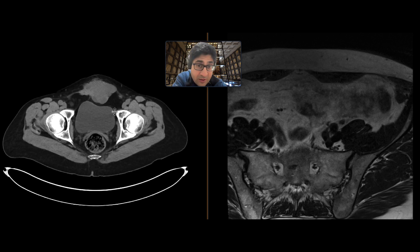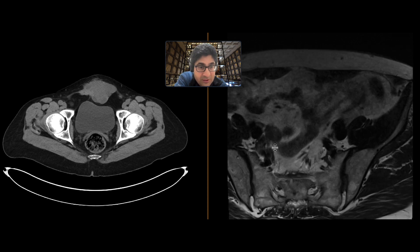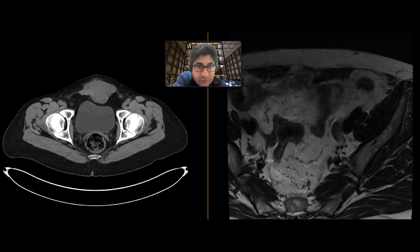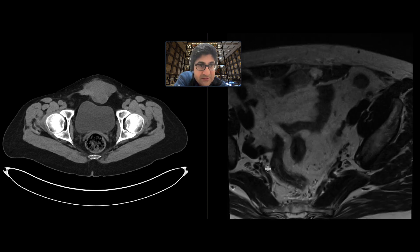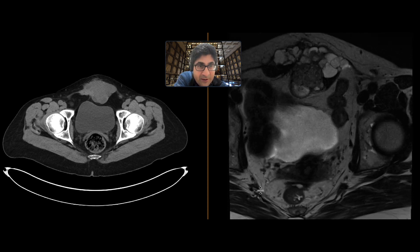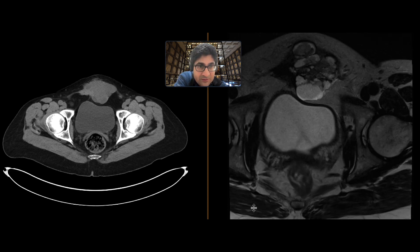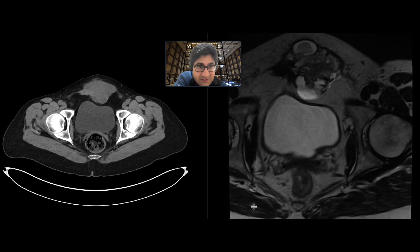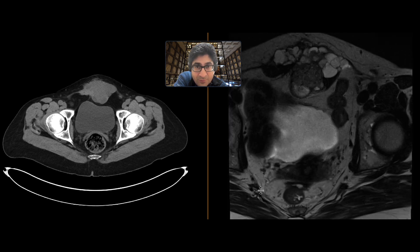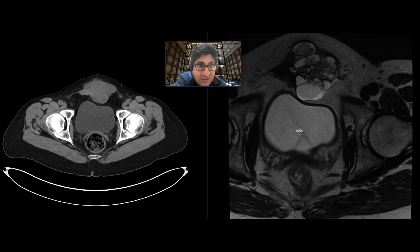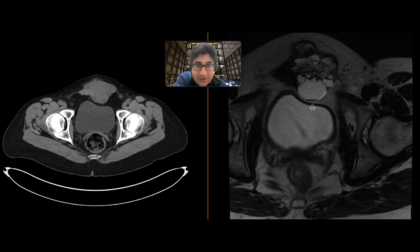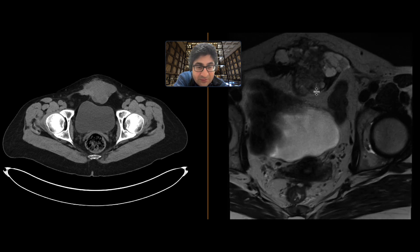An MRI was obtained to look at this a little bit better and see what's going on. I'll show you a few images from the MRI. This is the T2-weighted image without FATSAT. We can certainly see the mass there. It has components that have a sort of intermediate T2 signal intensity, and other components that have higher T2 signal intensity.